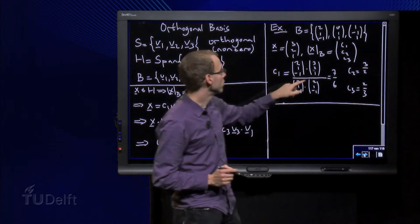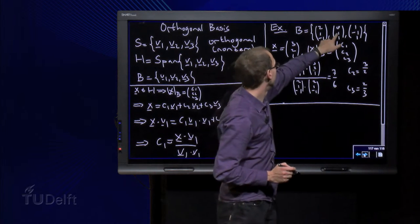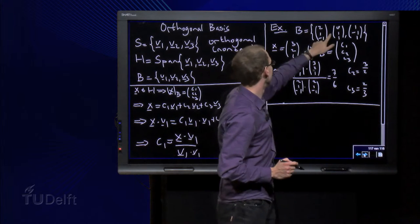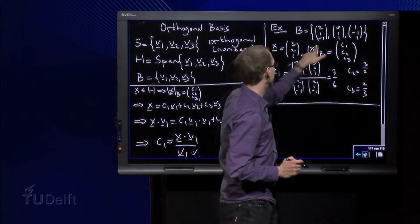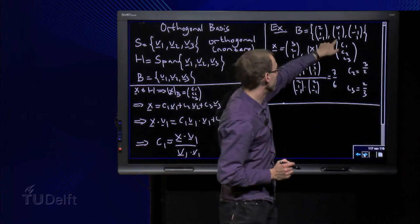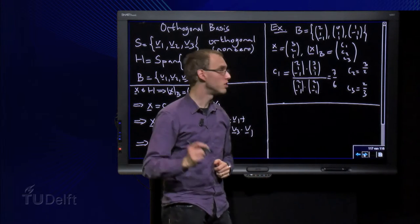And then for c2 we have to do something similar. The inner product between those two equals 0 plus 2 plus 1 equals 3 divided by 1 plus 1 equals 2. So that's c2.